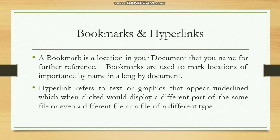The second type: a hyperlink sometimes opens a different file of the same type. For example, if you have a Word file and when you click on a hyperlink, another Word file opens — that is a different file. The third type: a file of a different type. When you click on a hyperlink and a picture opens, it is a different type of file.